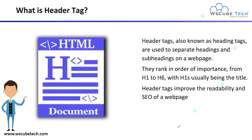Let's start with what is a header tag. Header tags, also known as heading tags, are used to separate your headings and subheadings on a web page. They rank in order of importance from H1 to H6, and H1 is usually your title — that is your big heading.